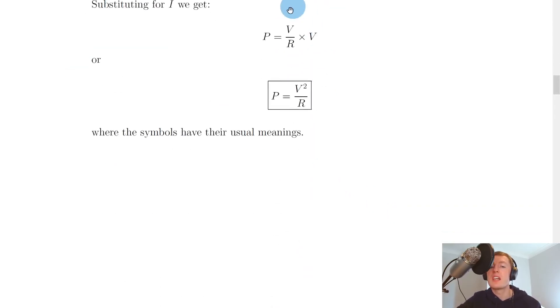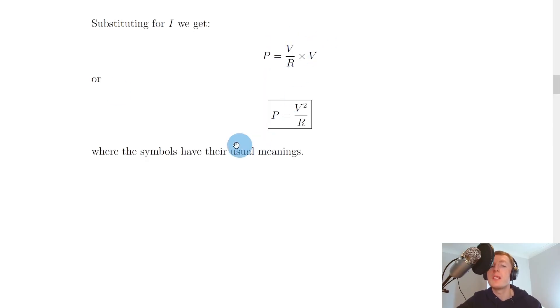Which gives us this thing here, so P = (V/R) × V, or because we've got V times V, that comes out as V², so we get the equation P = V²/R. And again, the symbols have their usual meanings. So if we know what the voltage across a component is and the resistance of the component, then we can also calculate its power. And remember, power is measured in watts.